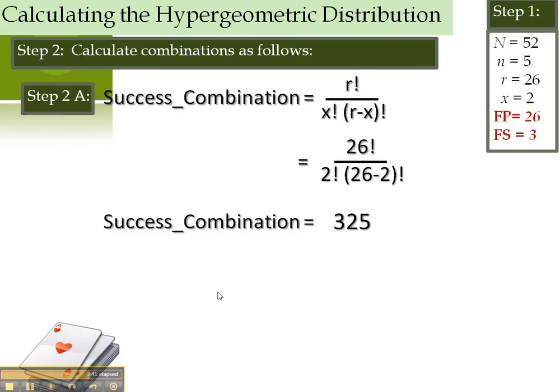In step two, we're going to make our math in the last calculation much easier by breaking it down into steps A, B, and C. First, we calculate the success. Return to your listing of variables, which I've repeated on the right side. And perform just the success part of the calculation.